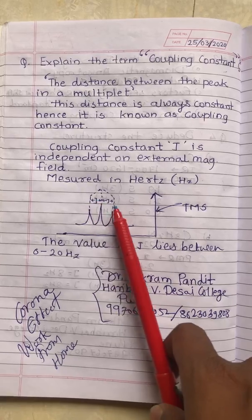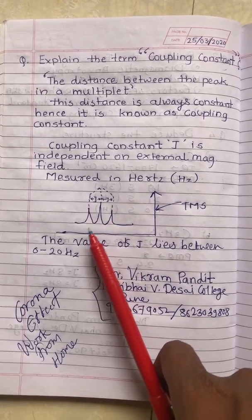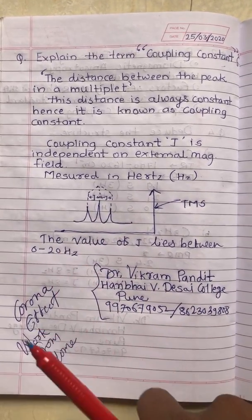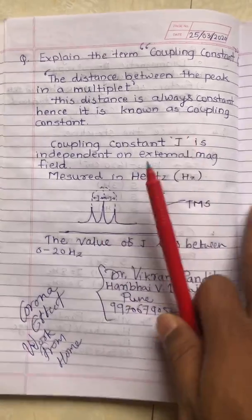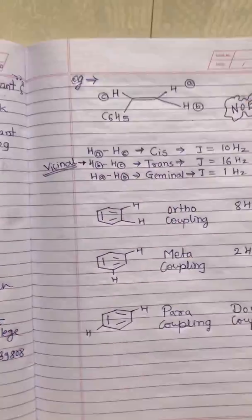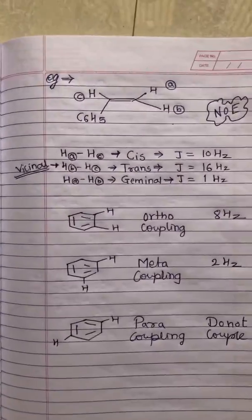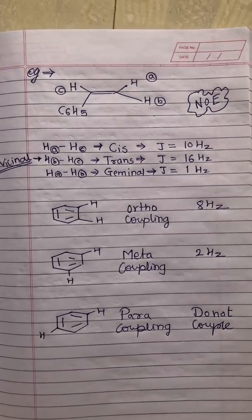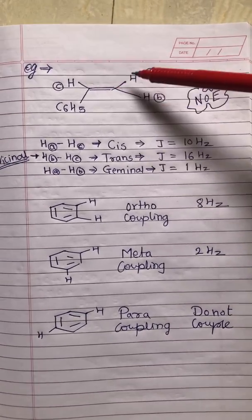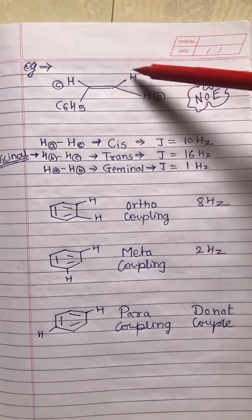These values are very useful for solving problems. For example, the coupling constant for cis and trans alkenes: in this alkene, Ha and Hc are cis to each other, and its value is 10 Hertz.